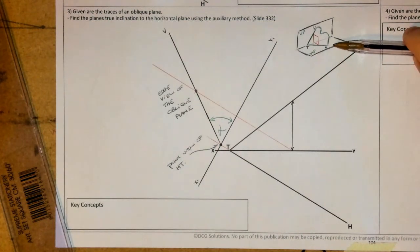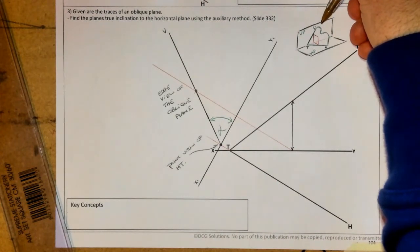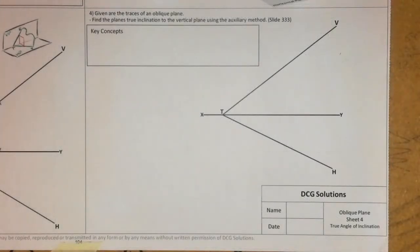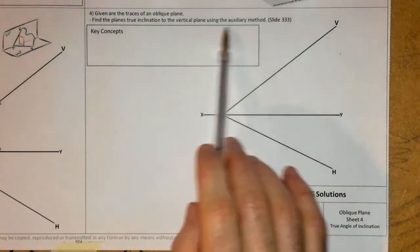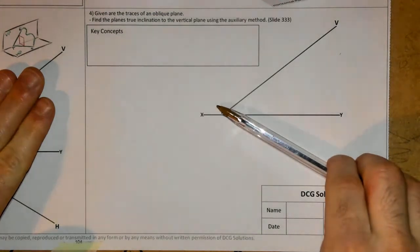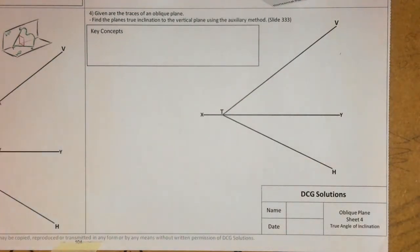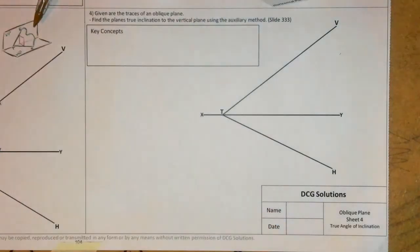That's the auxiliary view method. We looked in along the horizontal trace to get it as a point view, found a point on the vertical trace, and got the edge view showing the angle. In the next question we do the exact same thing but to find the angle relative to the vertical plane — looking in along the vertical trace instead.